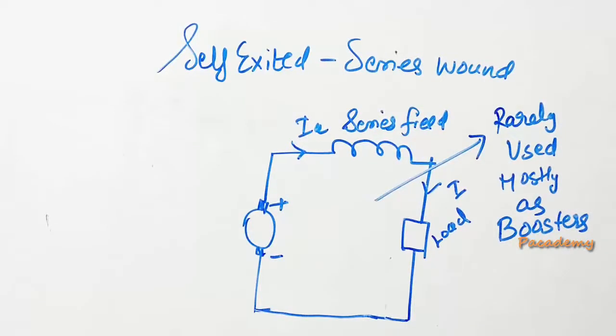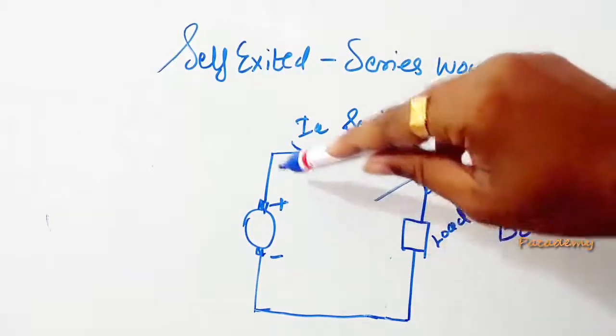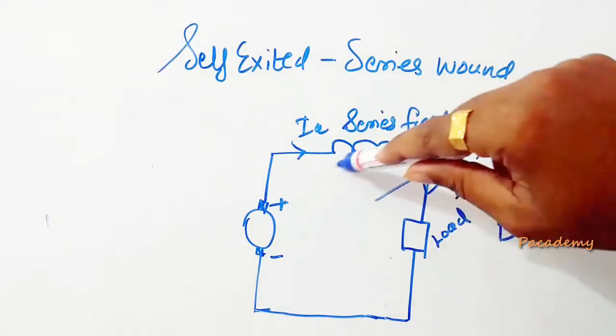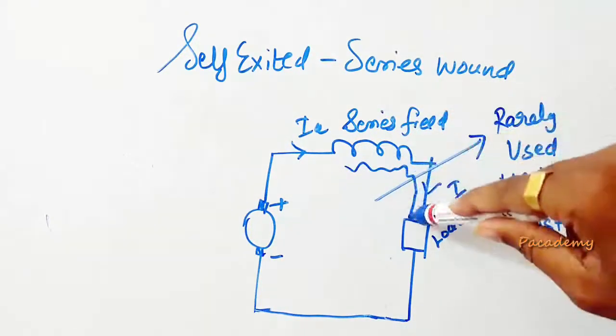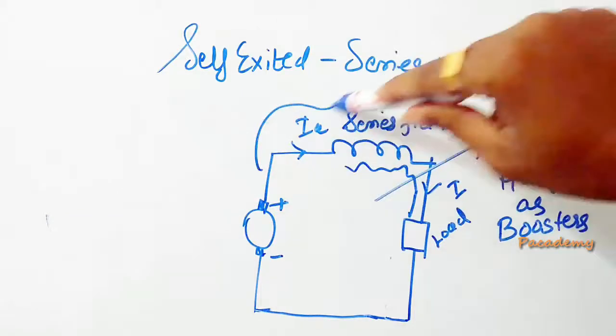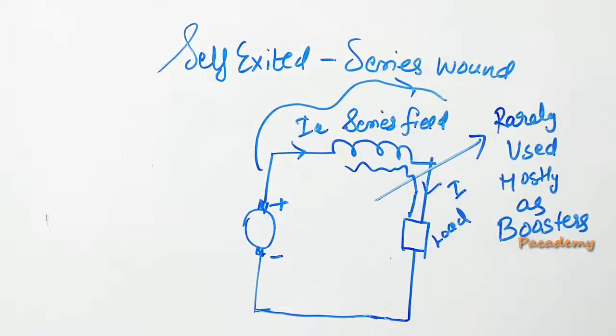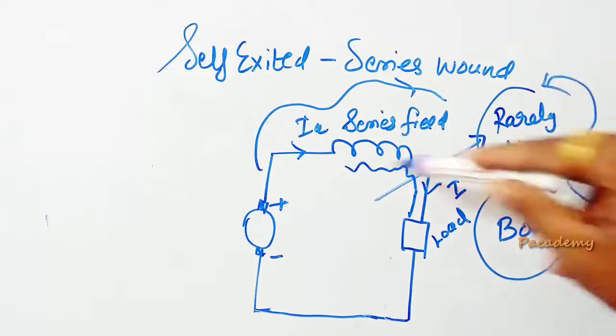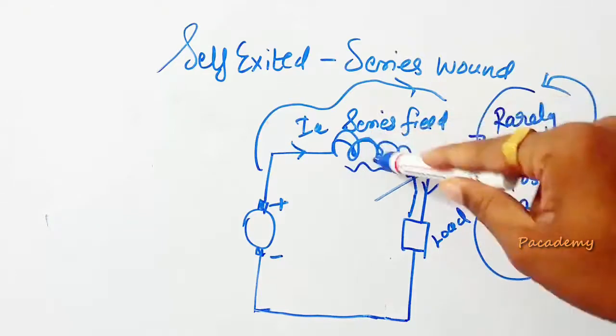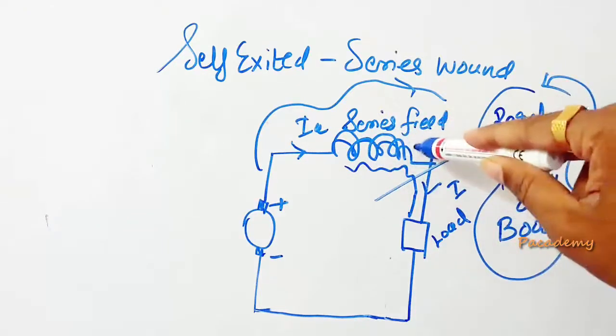Self-excited series wound generators have field windings wound in parallel with the load, which carries the full load current. Such generators are rarely used and mostly used as boosters. The series field winding consists of few turns of thick wire.